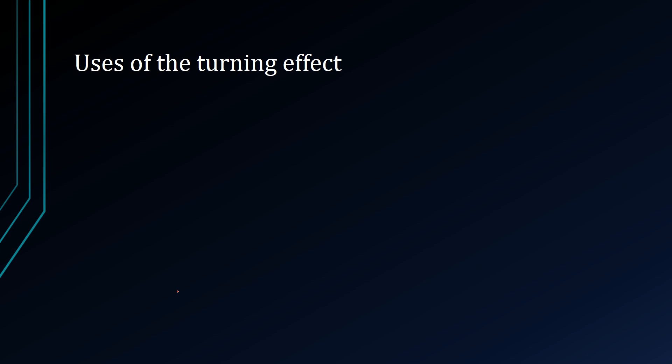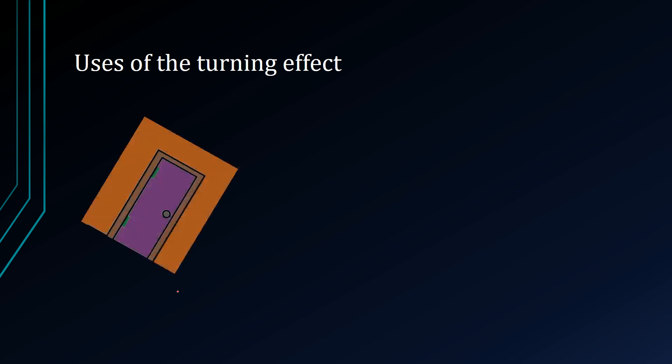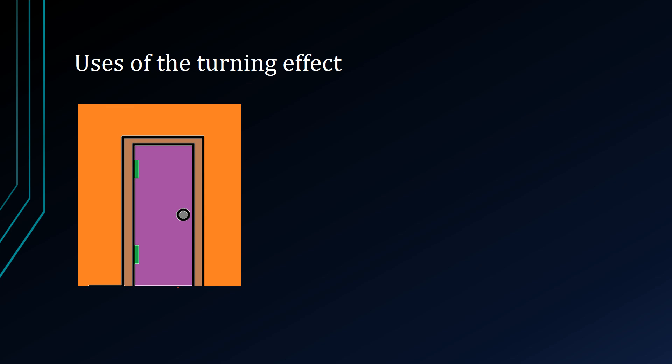Some of these applications of using a turning effect is, for example, a door. Notice that you have a door, you hold it at the door handle, and you pull it open, and it spins at the hinges. So in this case, the body itself is the door, and the pivot or fulcrum is the hinges that it swings about on.